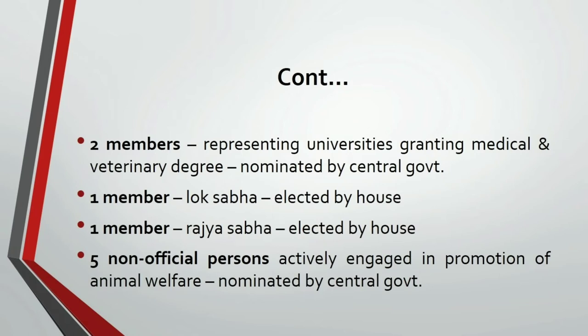Additionally, one member each is selected from Lok Sabha and Rajya Sabha, and both these members will be elected by their respective houses. There will also be five non-official persons in the committee who are selected by the central government, and they will be selected on the basis that they should be engaged in the promotion of animal welfare activities in the country.